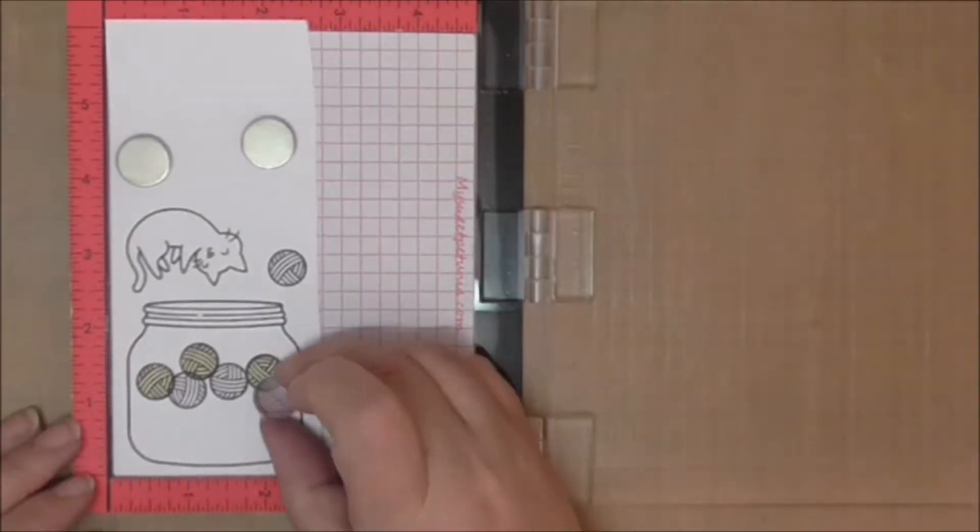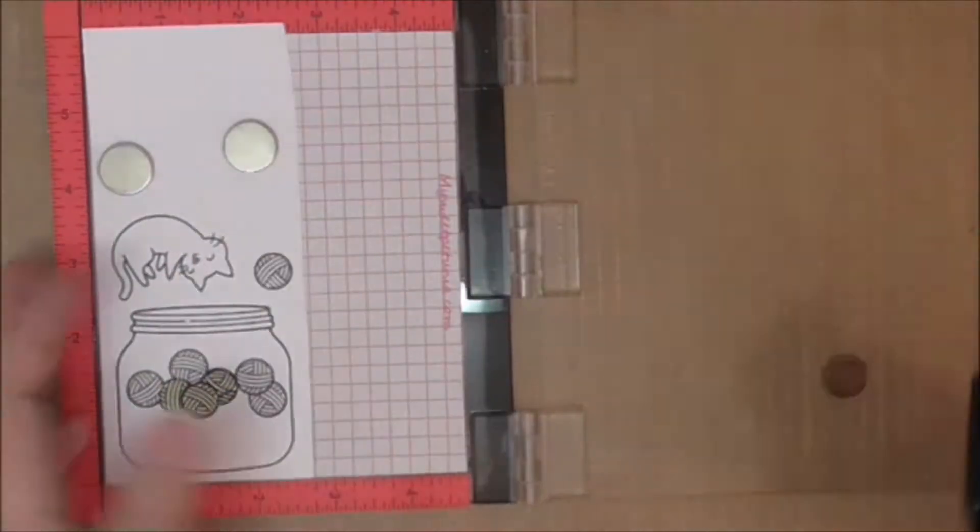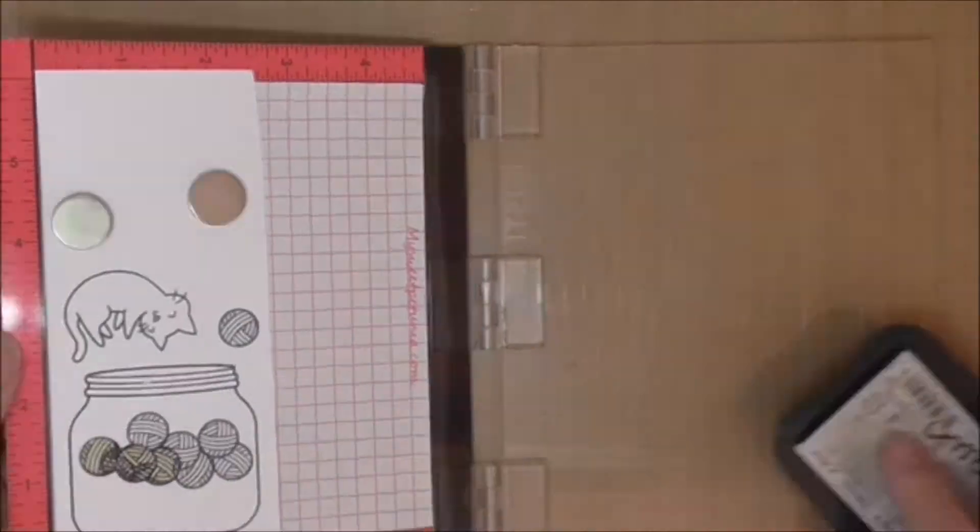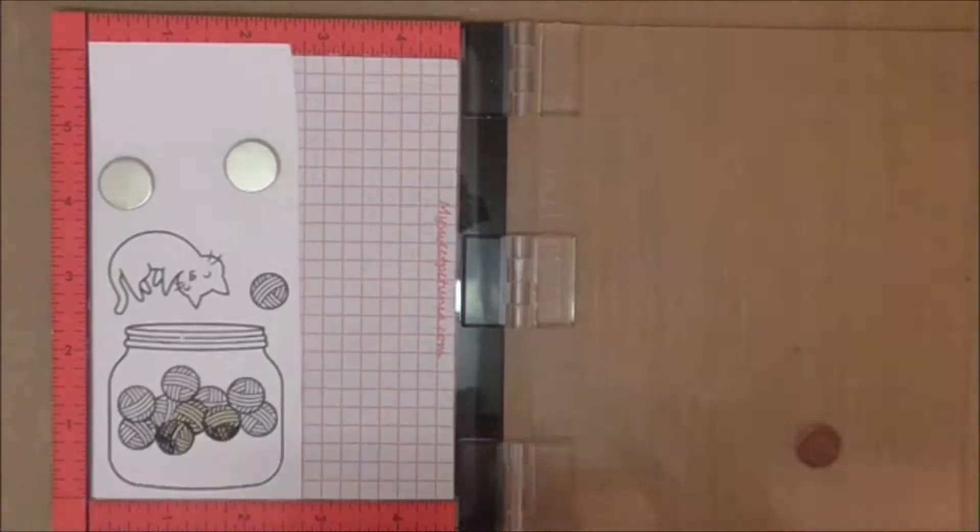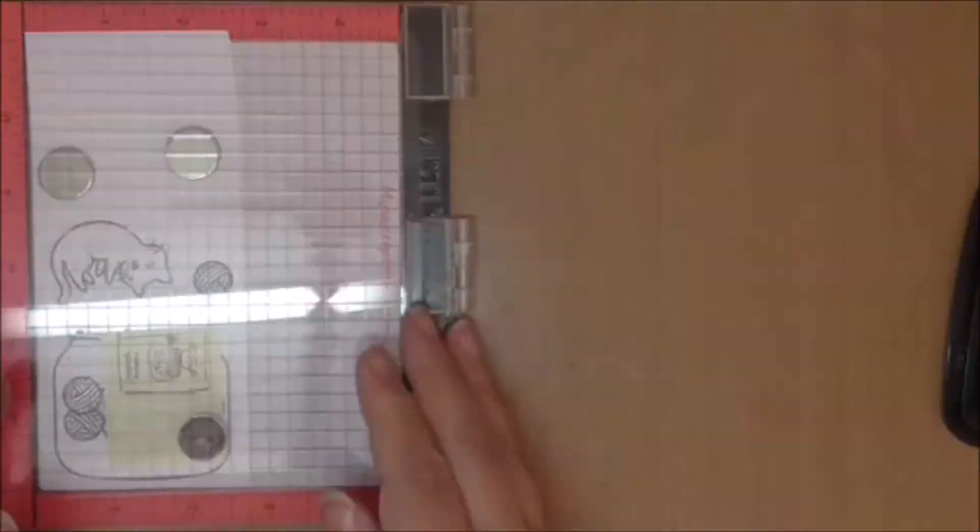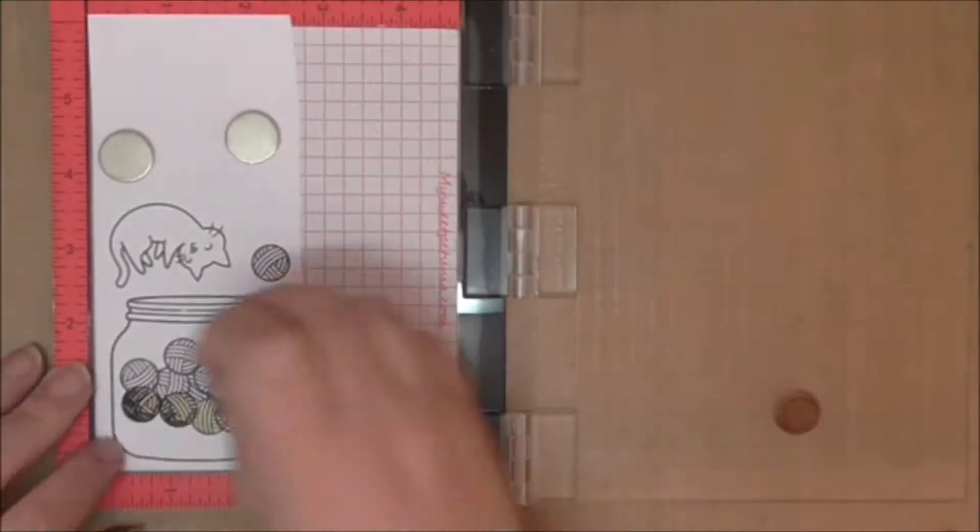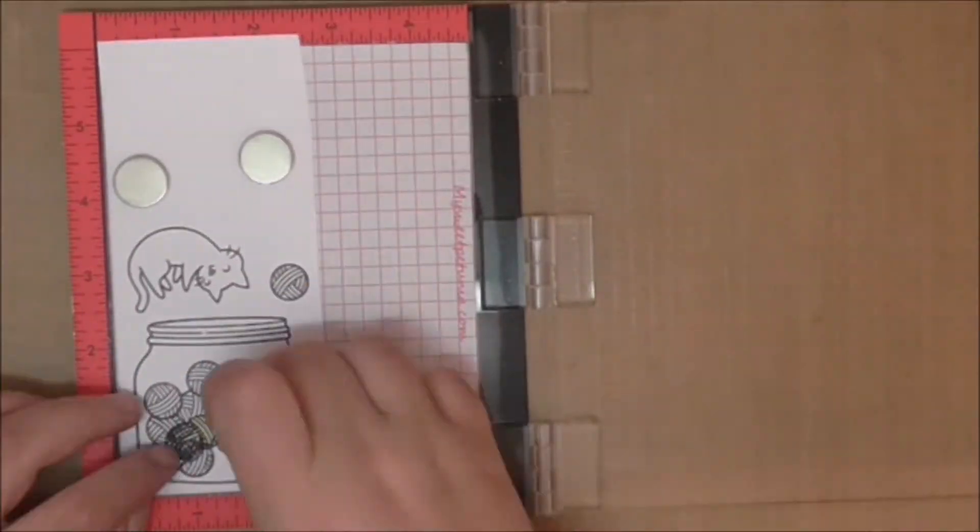So I created four post-it note masks of the yarn ball and I'm double stamping, masking, double stamping, masking, so I'm moving it all over the place so that I can fill that jar with balls of yarn.